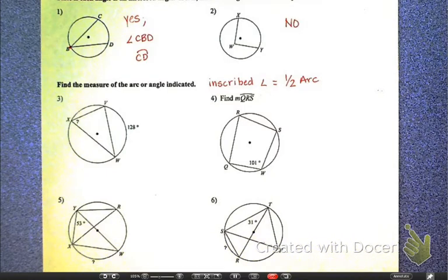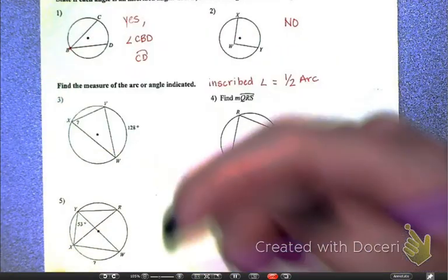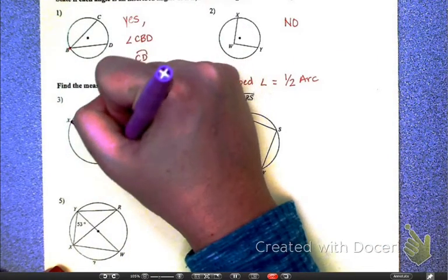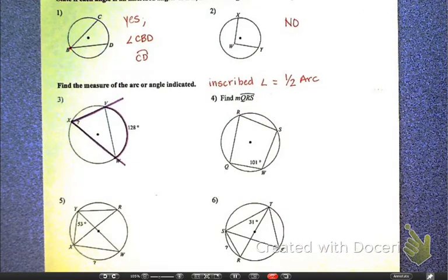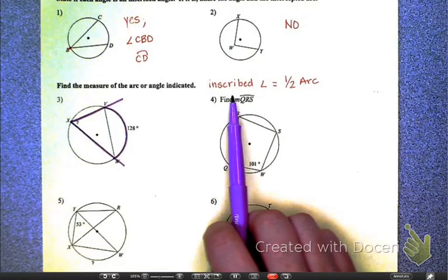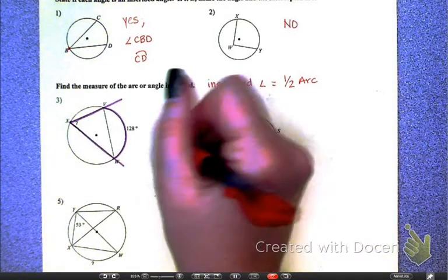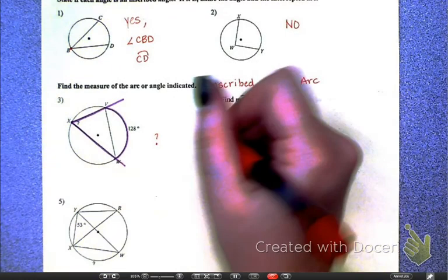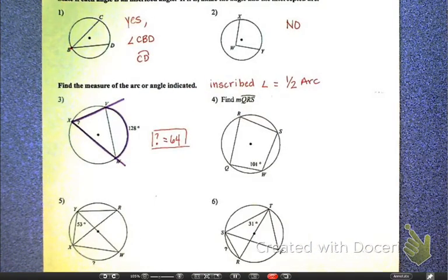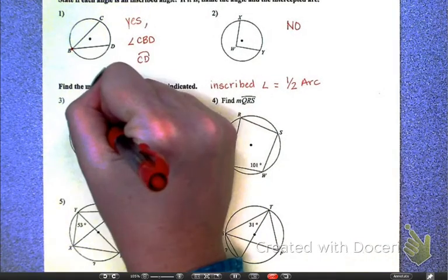So in number three, everyone sees what I'm solving for. Right? This angle here. Angle VXW. I'm going to take the sides of that angle and extend them out because that easily shows me what arc it creates. So I extended those lines out so I could see the arc that it creates. The 128. The 128. Yeah. So by definition, it says the inscribed angle is half of the arc. So half of 128 is 64? Okay.